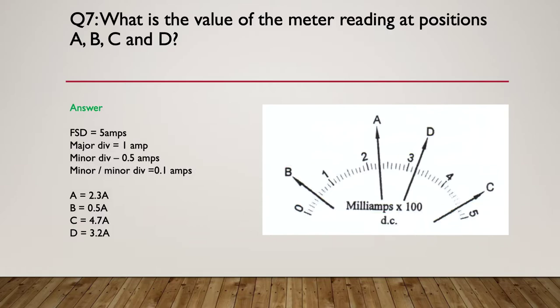And here's our answer. So 5 amps full scale deflection. It's an ammeter, so we're measuring in amps. Major divisions, 1 amp for every major division. Minor divisions, where it's every half an amp. And then we had minor minor divisions. So we had minor divisions here. That's every half an amp. You can see them in there. And then of course we had minor minor divisions, so we had another set of even smaller divisions inside those.